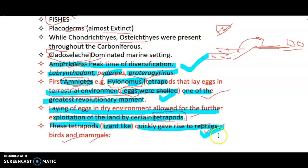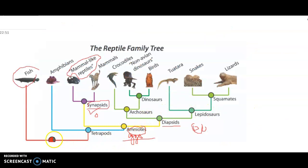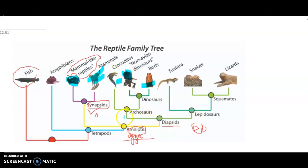As these tetrapods gave rise to reptiles through their shelled eggs, reptiles then gave rise to birds and mammals. This is a beautiful evolutionary chart: fishes evolved to lobe-finned fishes, then to tetrapods, which evolved into amniotes and amphibians. Amniotes laying eggs in dry environments branched into synapsids and diapsids. Synapsids are mammal-like reptiles and mammals, while diapsids include dinosaurs, birds, and crocodiles. Diapsids have two branches — archosaurs and lepidosaurs — with lepidosaurs being our lizards and snakes.